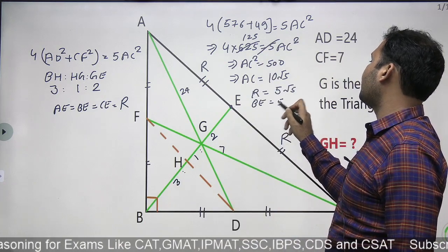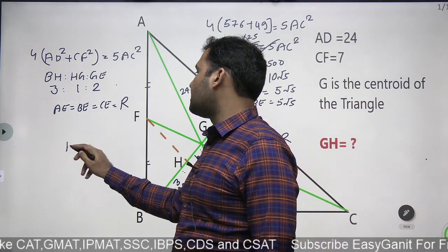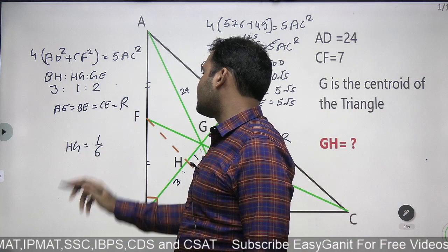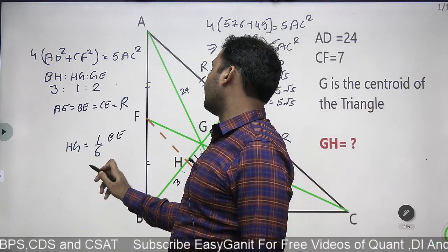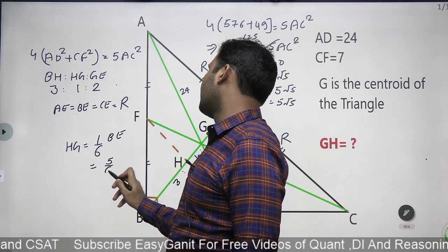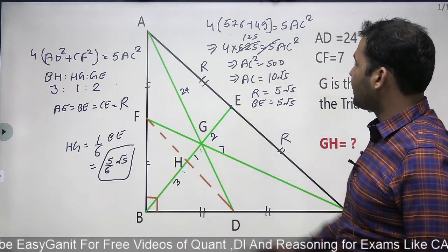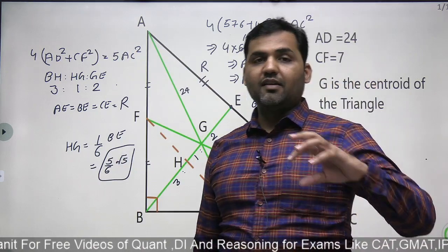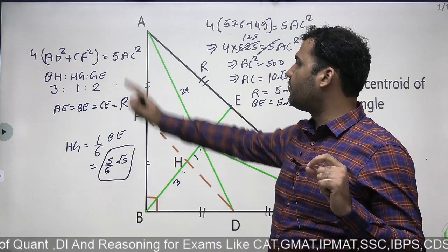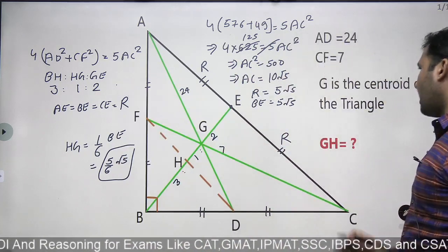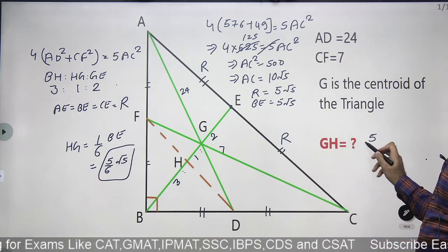Now that BE = 5√5, I can use the 3:1:2 ratio to get the answer. What I want is the length of HG. The length of HG is 1/6 of the complete length BE, which is 5√5. So the final answer is 5√5 / 6. That is the correct answer, and that's the implementation of the two rules. The length of GH = 5√5 / 6.